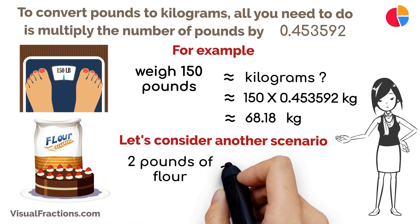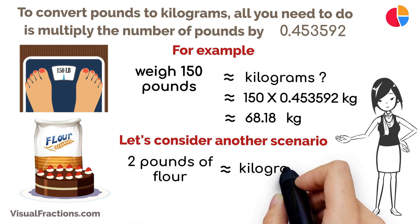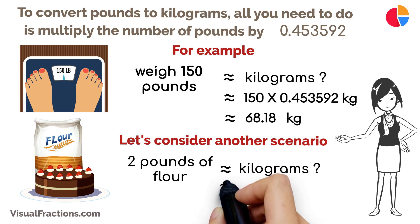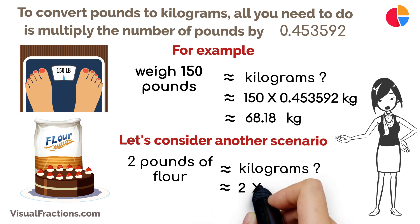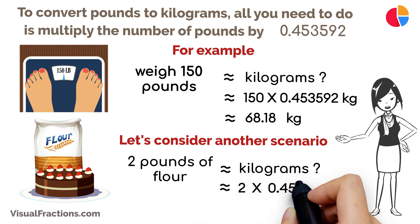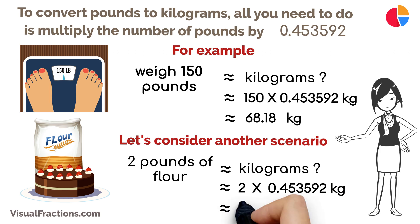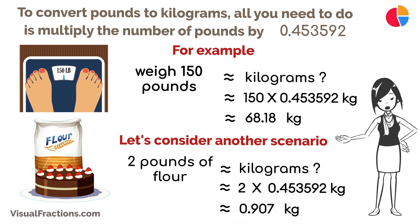Let's consider another scenario. If you're a chef following a recipe that calls for two pounds of flour to be converted to kilograms, it's straightforward — just multiply two pounds by 0.453592 to get about 0.907 kilograms.